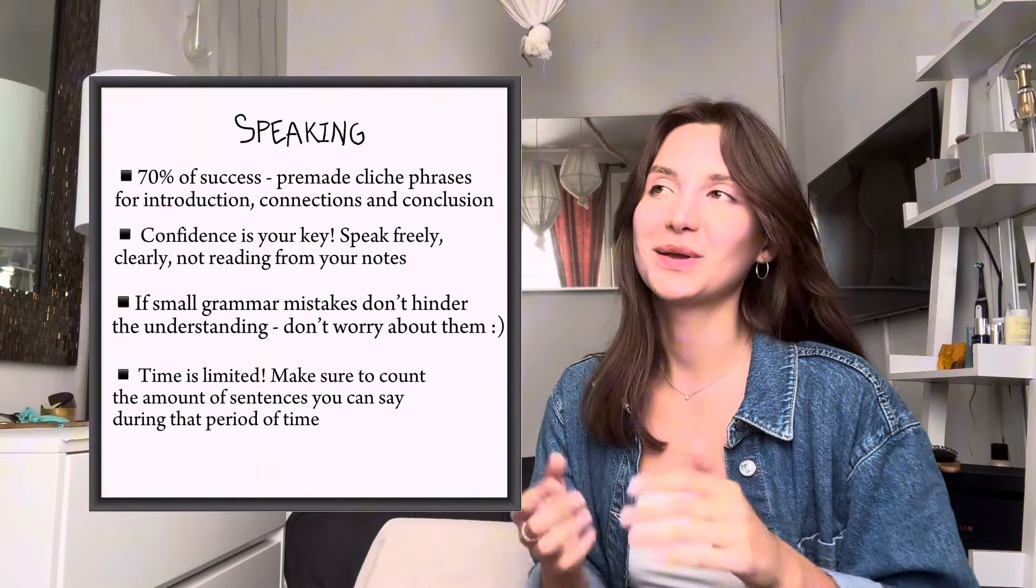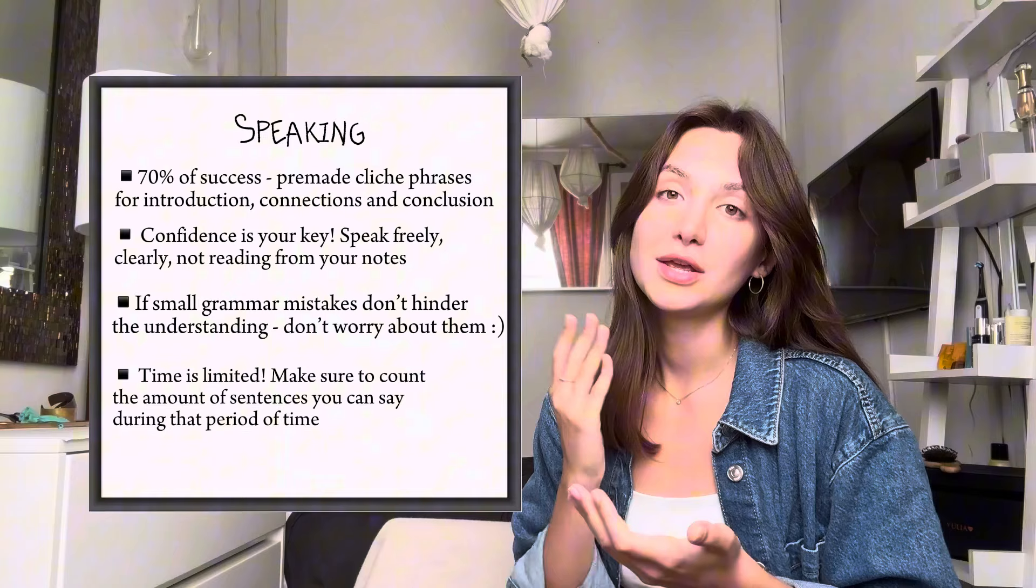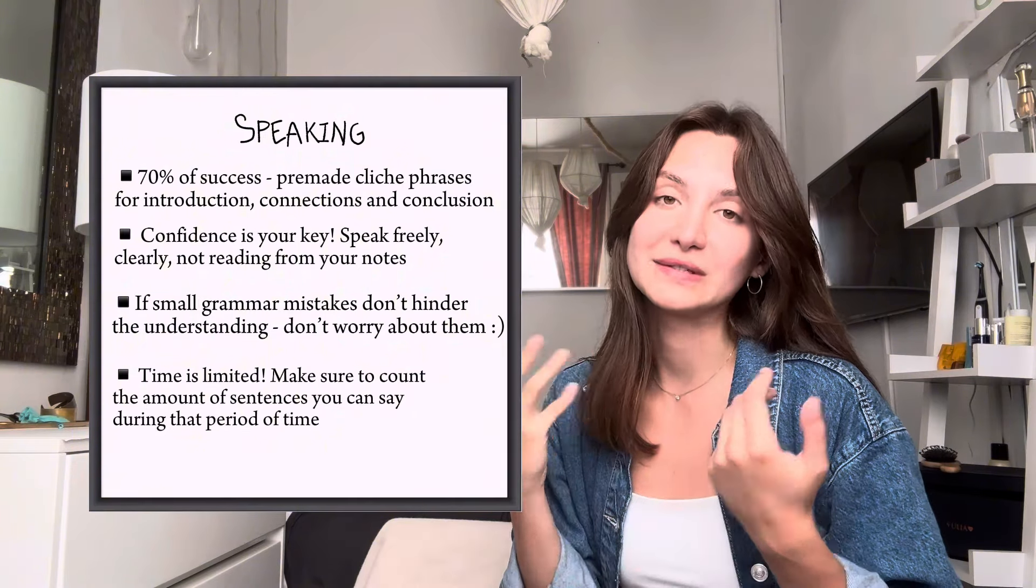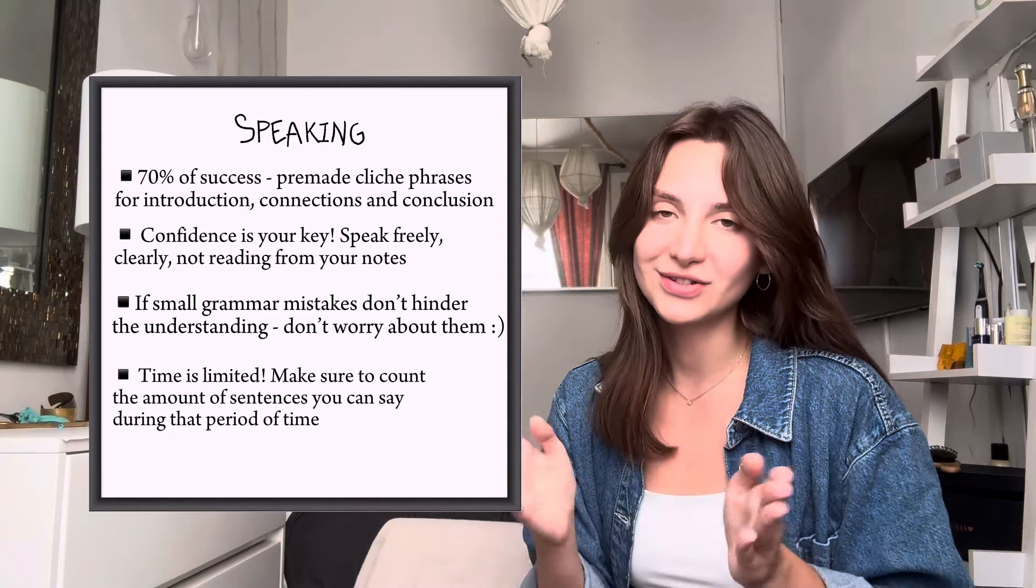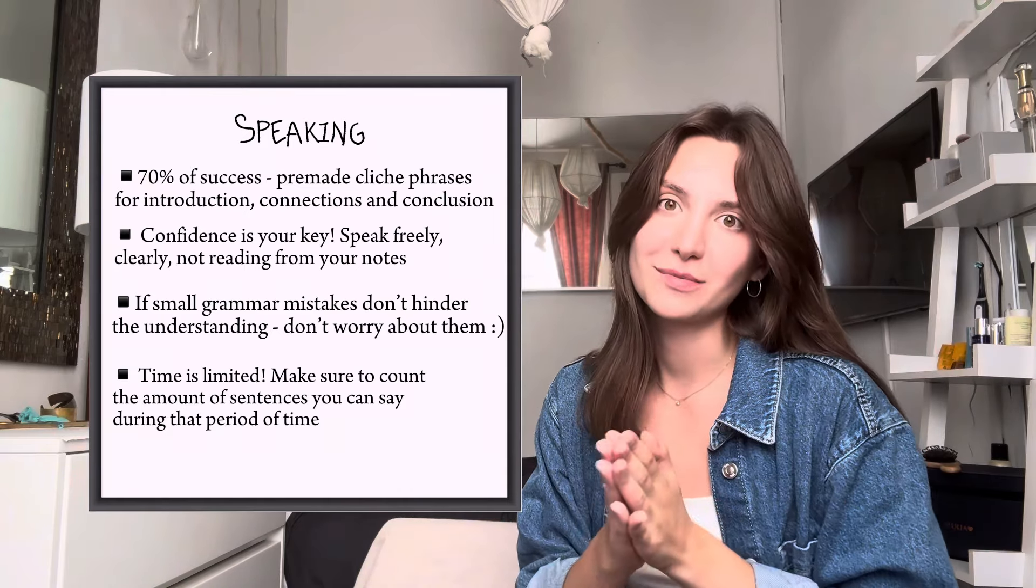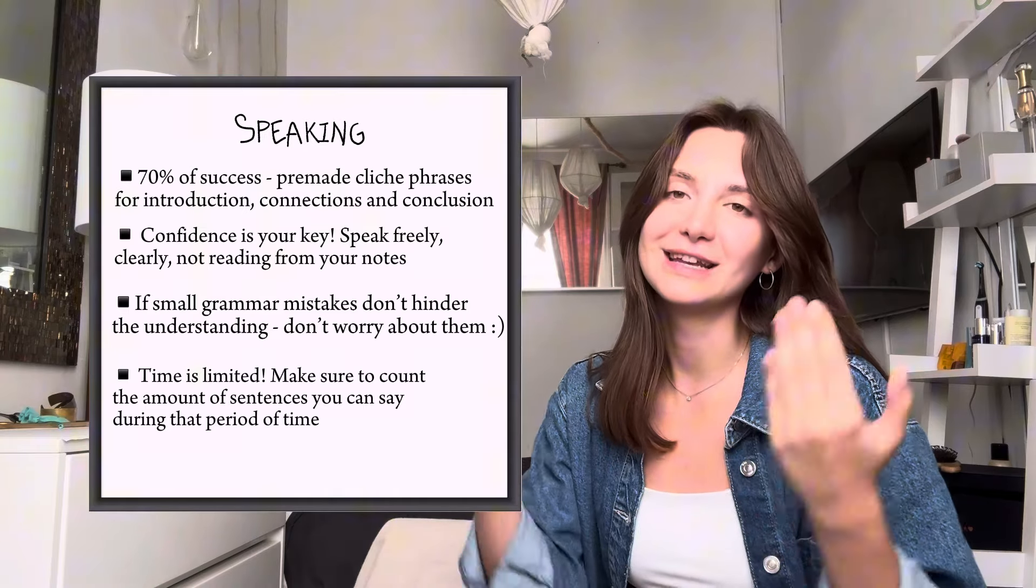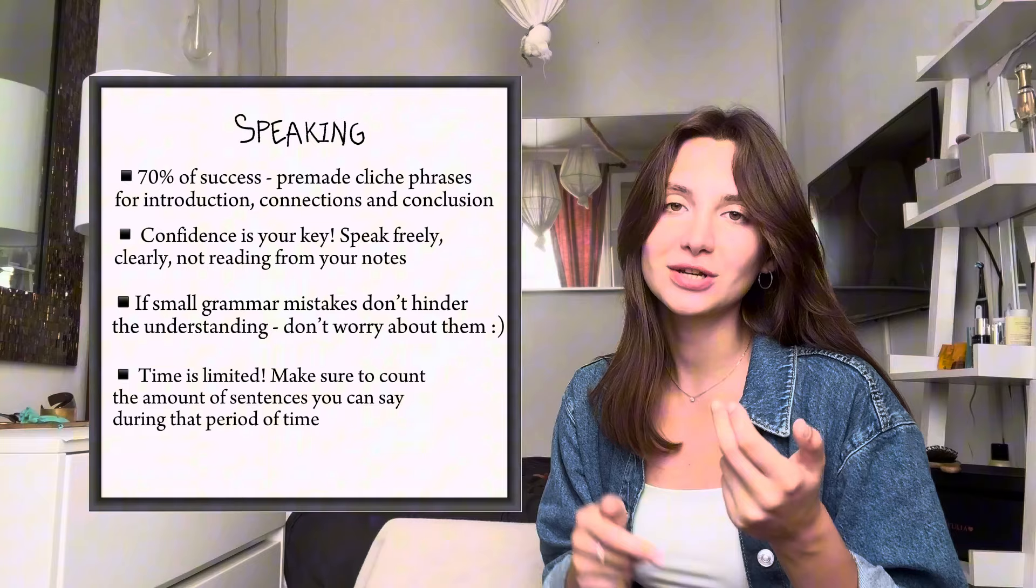Basically, you have to count yourself because some people are slow speakers, some speakers are fast. You then need to customize the amount of sentences you'll be saying. But to reduce this human factor, this stress factor, you have to know 70% of what you're saying at the speaking part even before it starts. And these are all these conclusion, introduction, linking words, and so on.